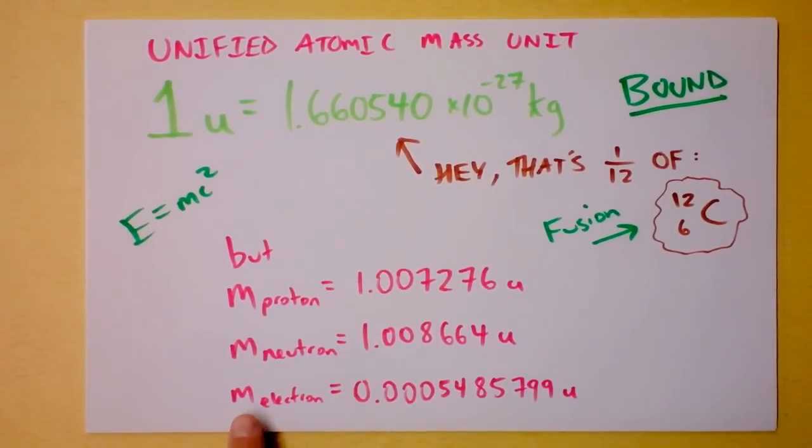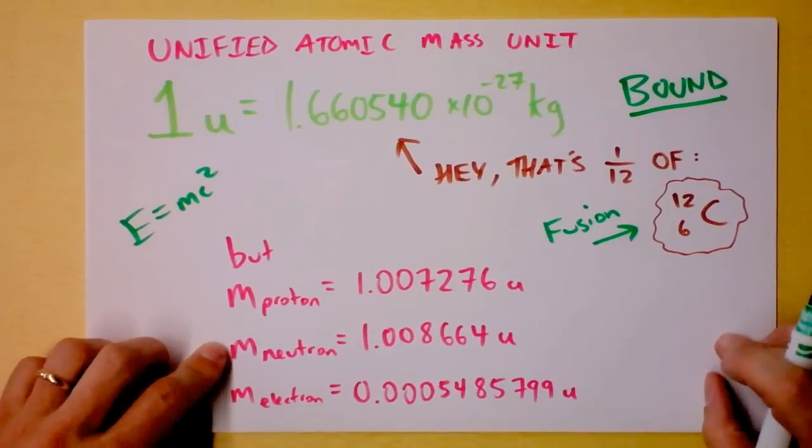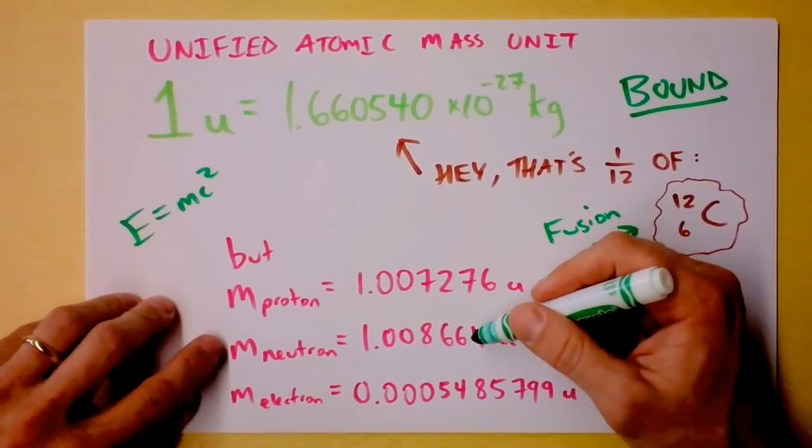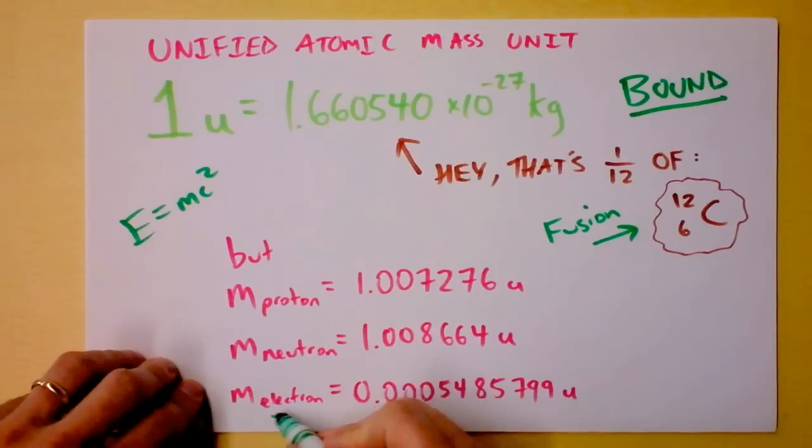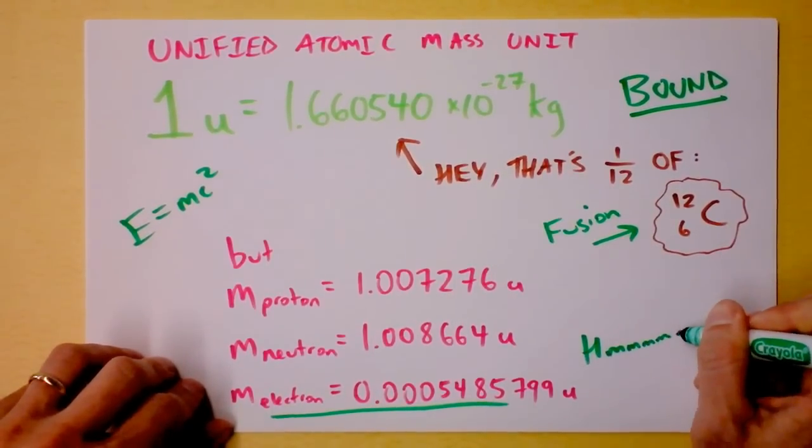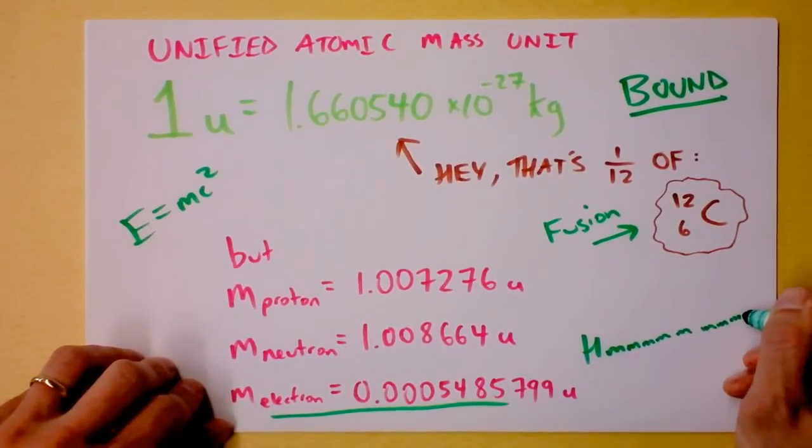Check this out. The neutron's mass is more than the proton's mass. Now that's kind of cute. And the difference between them, although not exactly, is kind of similar to the mass of an electron. And I'm going to say hmm about that.